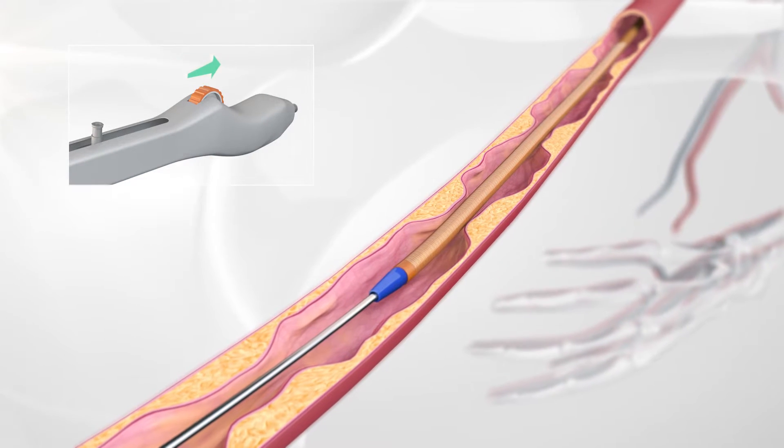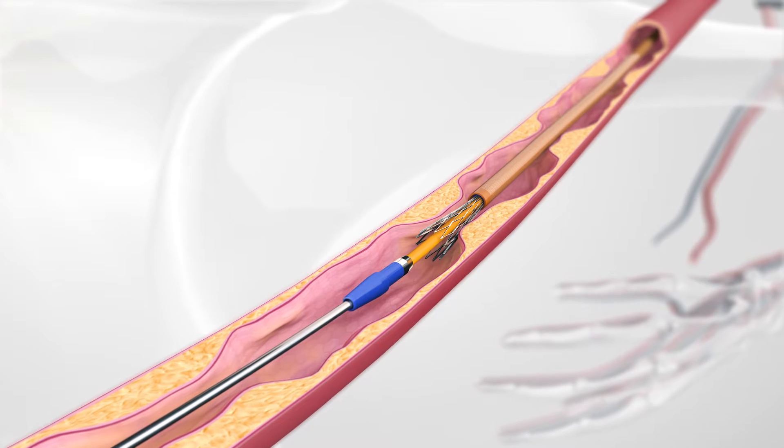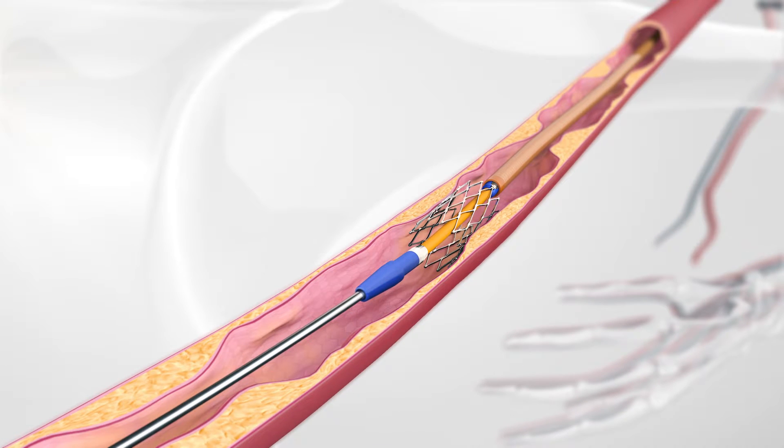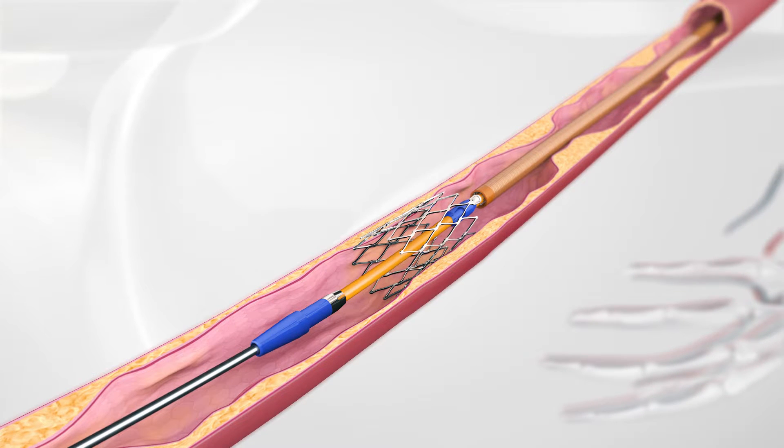By turning the wheel on the handle, the stent is released into the lesion of the vessel. The stent is completely released once the marker band is unlocked from the mount point.